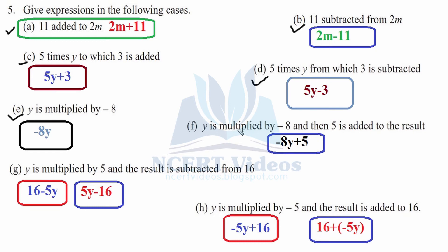F part: y is multiplied by minus 8, then 5 is added to result. Y and minus 8 are getting multiplied — therefore, we write minus 8y. Then whatever the output is coming, 5 is getting added to it — added to the result of minus 8y. Next, y is multiplied by 5, and the result is subtracted from 16. Therefore, we are writing 16 first — so it is 16 minus 5y.